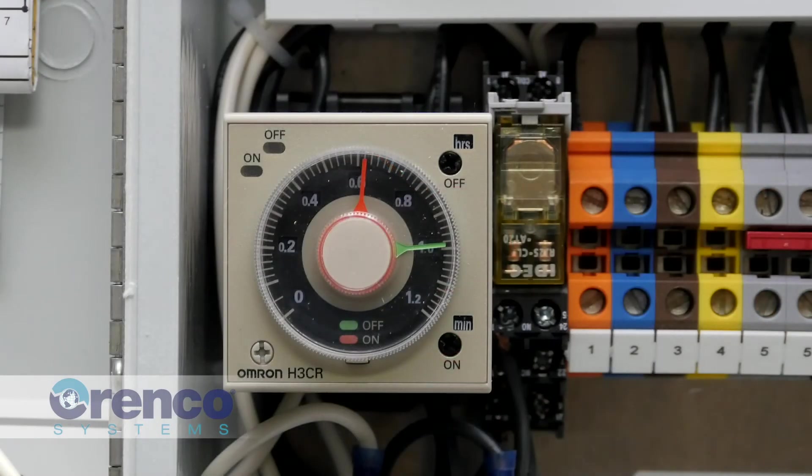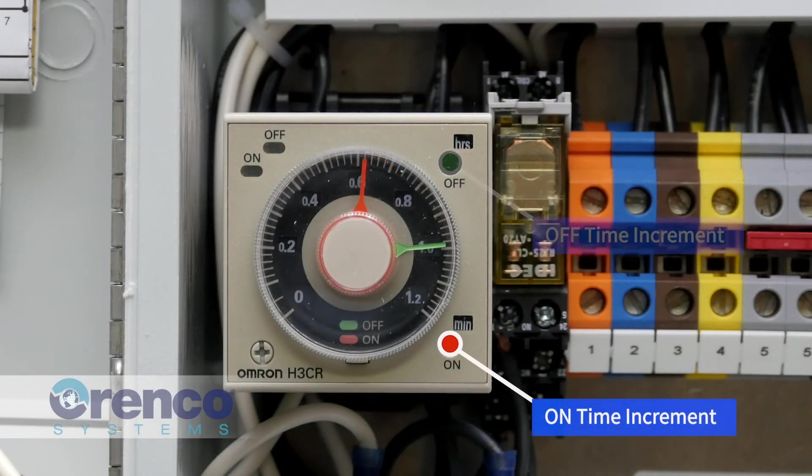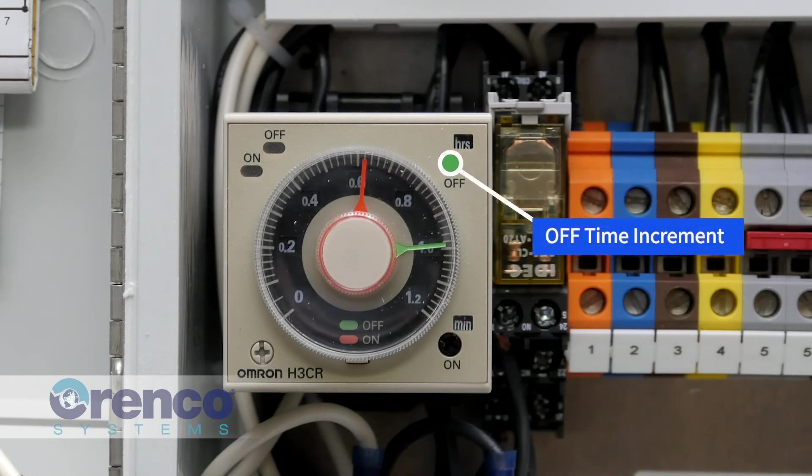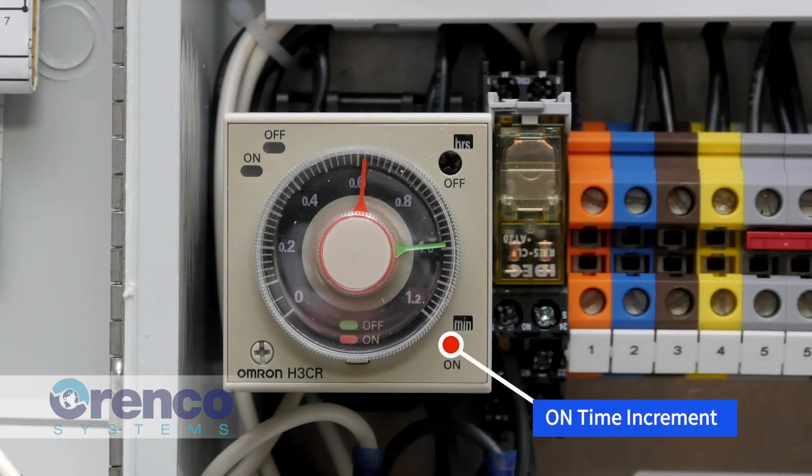Next, using the Phillips head screwdriver, adjust the on and off time increment labels to the appropriate time duration increments. The off time is most generally set in minutes or hours, and the on time is most generally set to minutes or seconds.